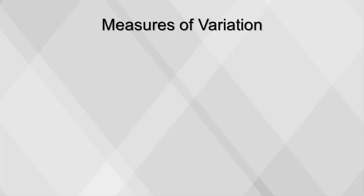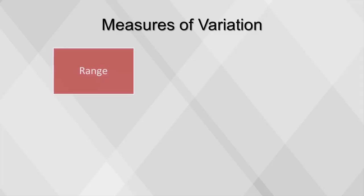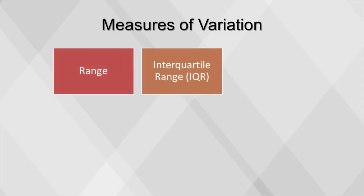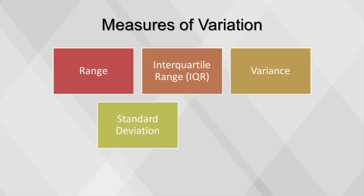The following measures help us understand how the values for a variable are spread out around the mean: range, interquartile range, variance, standard deviation, and standardization.